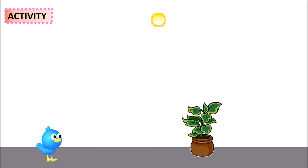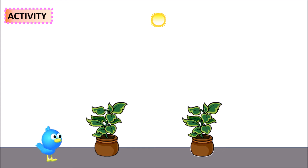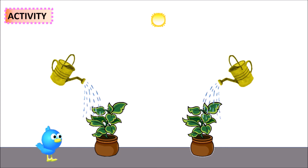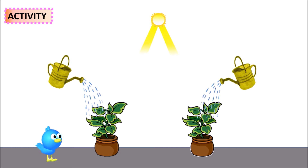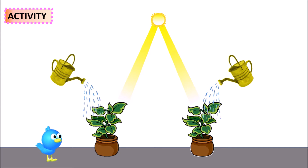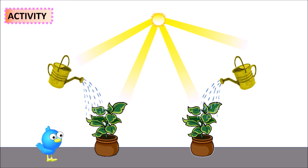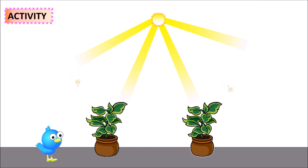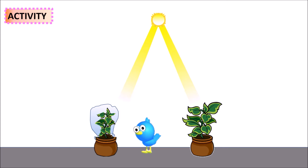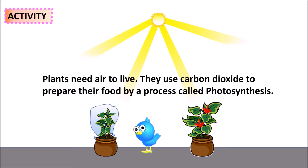Plants also require air to live and grow. Let's do an activity. Take two potted plants, add water to both, and keep them in sunlight. Cover one of the plants with a thin transparent plastic sheet and observe both plants for a few days. The covered plant will shrink and dry out after some days, while the other plant will remain healthy.